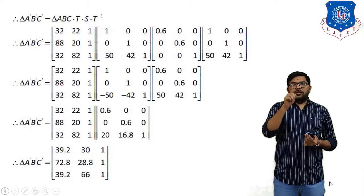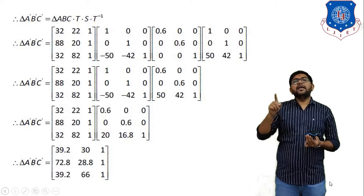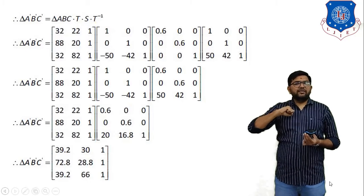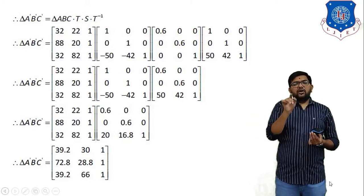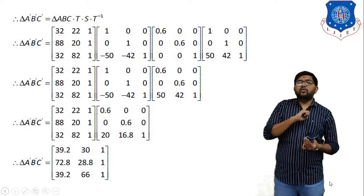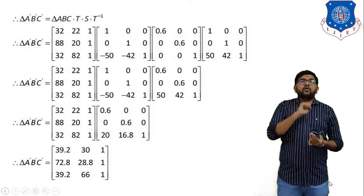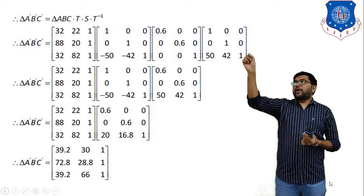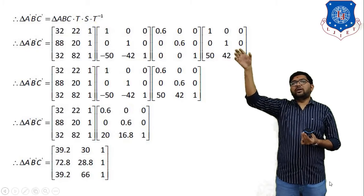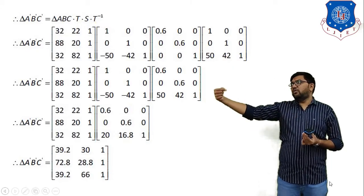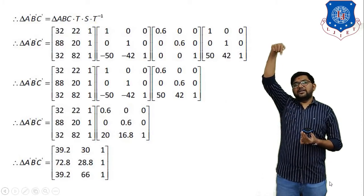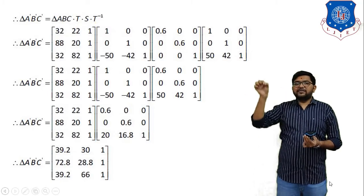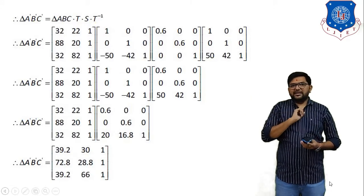The equation of translation is [1 0 0 / 0 1 0 / TX TY 1]. Since we are scaling about point X(50, 42), we need to shift that point to the origin by moving minus 50 in the X axis and minus 42 in the Y axis. So the translation matrix T is: [1 0 0 / 0 1 0 / −50 −42 1]. This is the equation of translation.